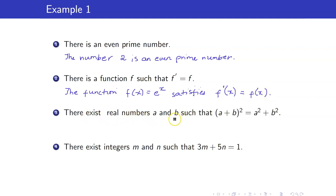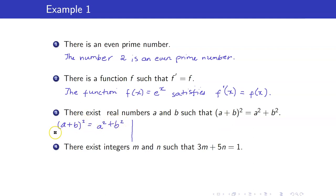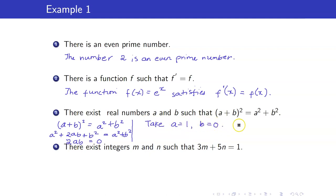Next, there exist real numbers a and b such that a plus b quantity squared is equal to a squared plus b squared. We know that this is not true in general. However, this is just saying that there are real numbers which can satisfy this equation. The left-hand side is a squared plus 2ab plus b squared, so we want 2ab to be equal to 0, which means at least one of a and b is 0. So we just take a to be equal to 1 and b equal to 0, and then show that it satisfies the given requirement.